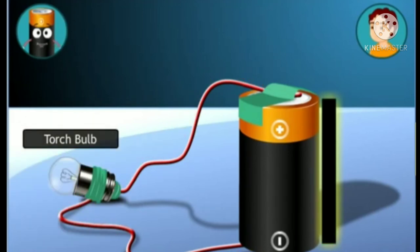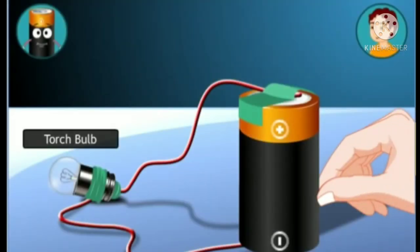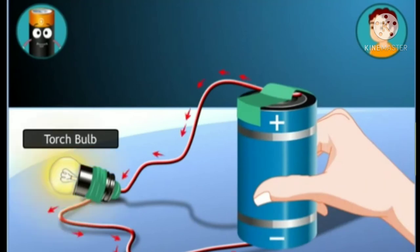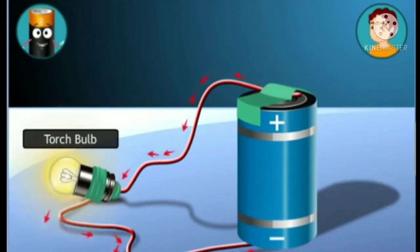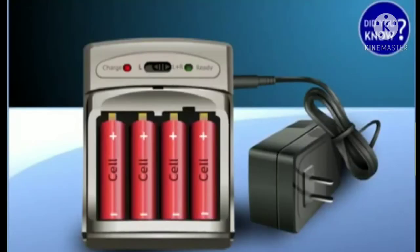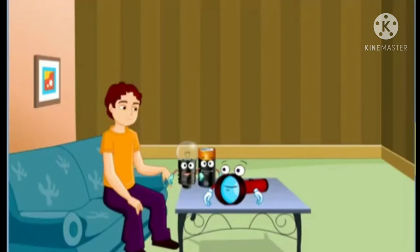So, in our case, if my chemical energy gets over, Flashy won't be able to provide you light anymore. So we will need to replace you with a new cell? Yes, so that Flashy can keep functioning. Did you know a rechargeable cell or a storage battery can be recharged using electricity?